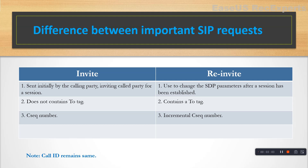The second difference is the CSeq number. The CSeq number of INVITE will be lesser than the RE-INVITE. The RE-INVITE will have an incremental CSeq number from the original INVITE — if your INVITE has CSeq 100, then the RE-INVITE will have CSeq 101. But how will you understand that the RE-INVITE belongs to the same initial INVITE? Both will have the same Call-ID. The Call-ID remains the same. These are the differences and the way to understand if it's an INVITE or RE-INVITE.